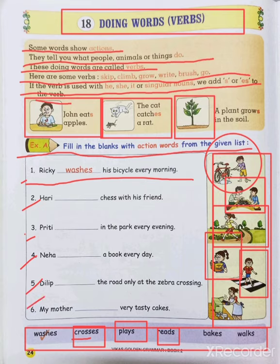The sixth one: The mother dash a very tasty cake. The word is BAKE — B-A-K-E — ends in E, so we only add S at the end: The mother bakes a very tasty cake.